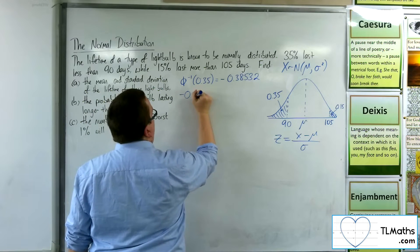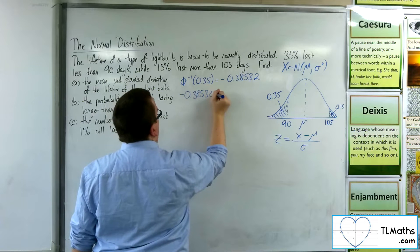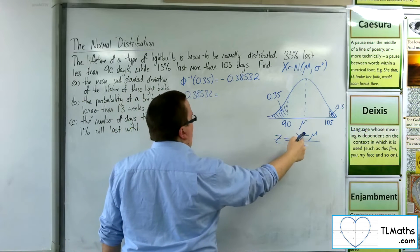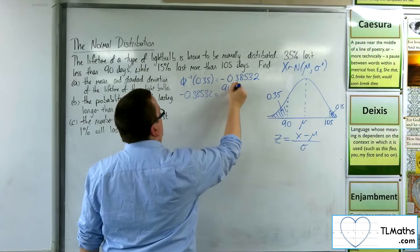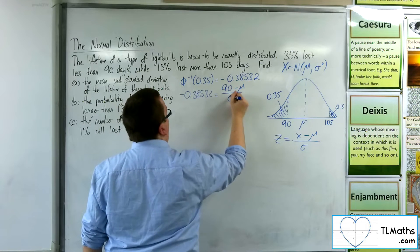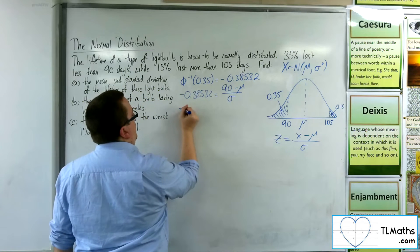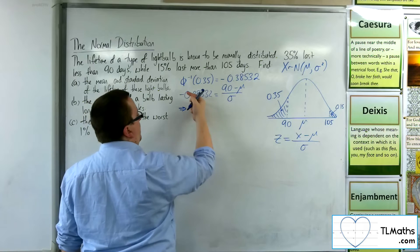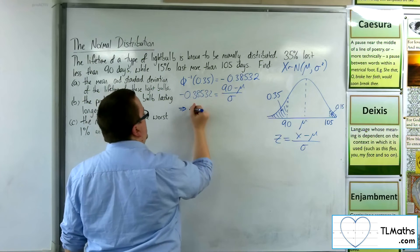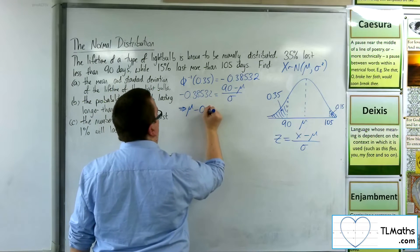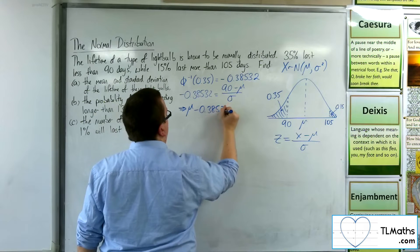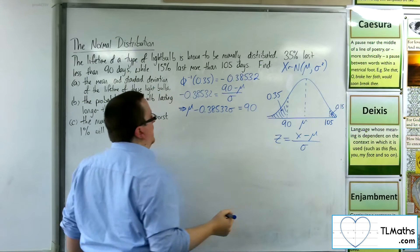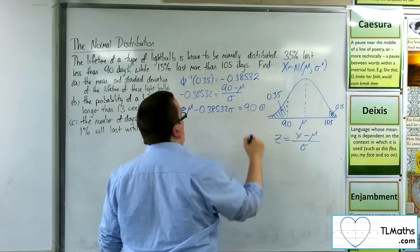So minus 0.38532 is equal to x, which is 90, take away the mean divided by the standard deviation. So rearranging, I can multiply it by the sigma, add the mu. So mu take 0.38532 sigma is equal to 90. And this is equation number 1.